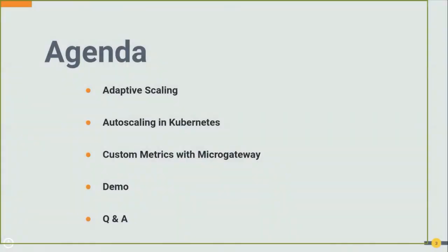First we are going to talk about adaptive scaling — what it means and the benefits it offers. We are treating it as a generic concept and then talk about how it evolved. Then we'll move to auto scaling in Kubernetes, covering different auto scaling options and horizontal pod scaling. Then we'll talk about the new feature — what was done to support scaling with custom metrics and how to configure it.